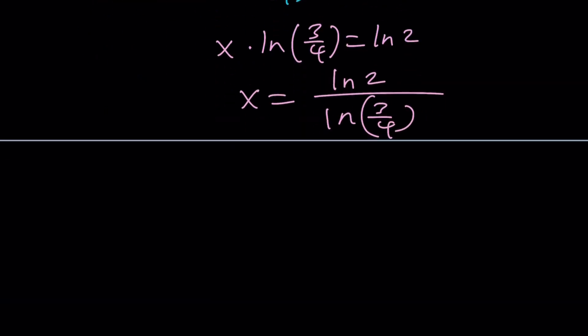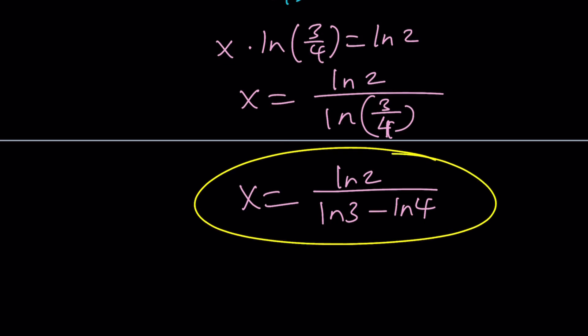And x finally is ln 2 divided by ln 3 fourths. Now, ln of a quotient, you should definitely know that rule. We can write this as ln 2 over ln 3 minus ln 4. It's just another way of writing the solution.